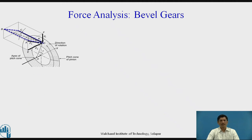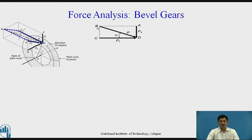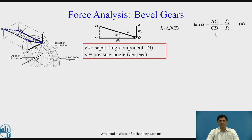Now, considering the plane in a 2D view: BD represents the force P. The pressure angle is alpha. PS is the separating force and PT is the tangential force. In triangle BCD, tan alpha equals BC divided by CD, which is PS upon PT. Therefore, the equation is PS equals PT tan alpha.